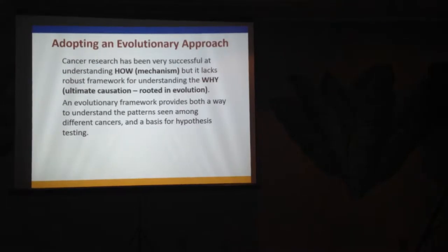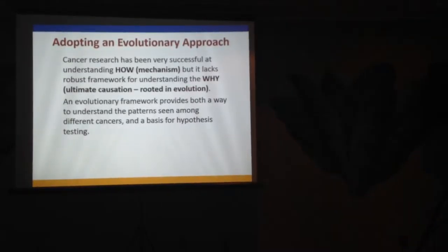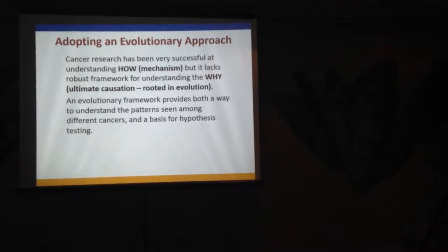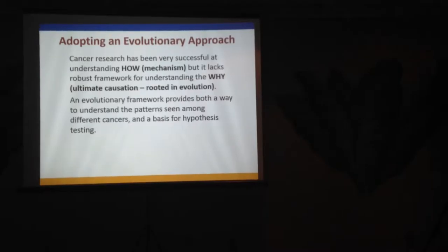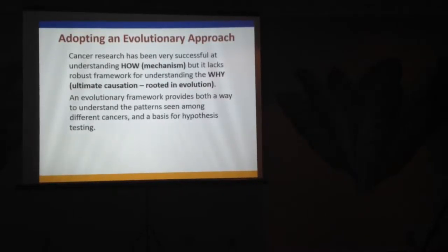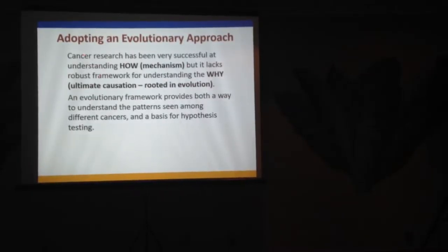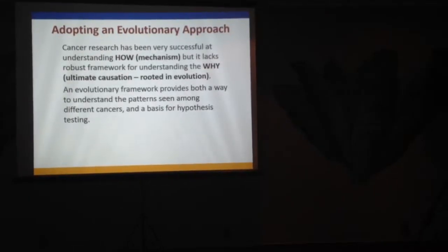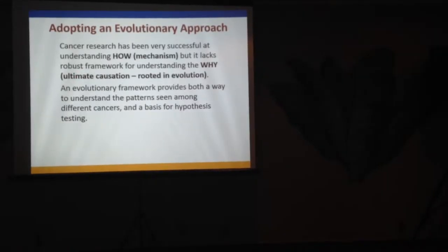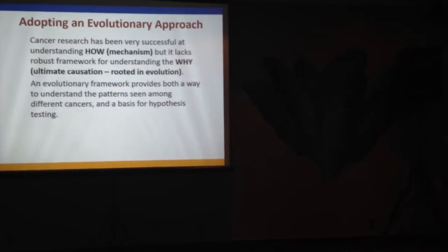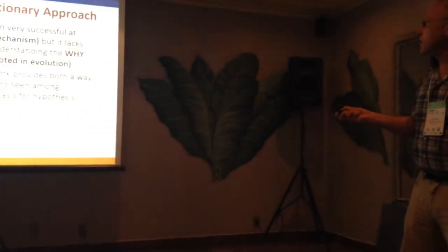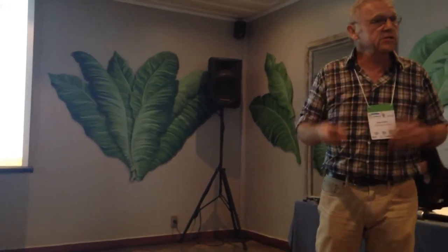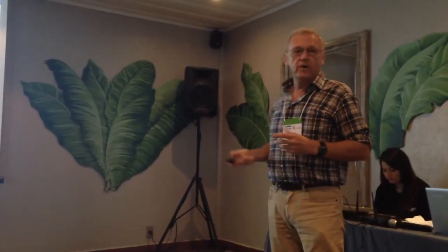The whole point here is very similar to the quote from Dobzhansky that Daphne showed us on the first edition of Evolution. It's really apparent in cancer biology: cancer biologists have been incredibly successful in getting at the nuts and bolts of how things happen, but they really don't have a framework for understanding the differences between different sorts of cancers. An evolutionary framework is a way of understanding patterns seen among different things — in this case different cancers — and the basis for hypothesis testing.